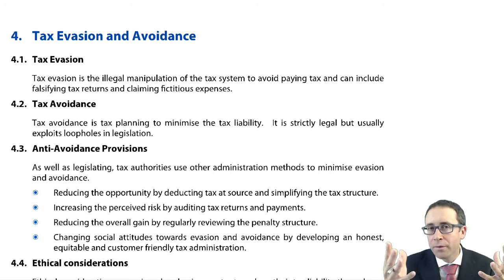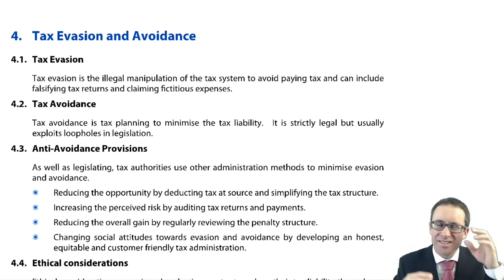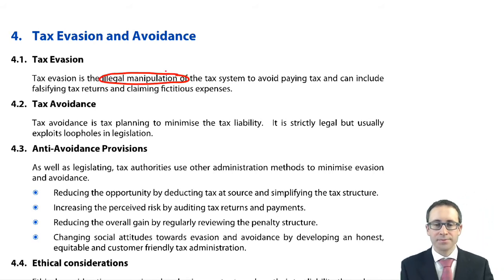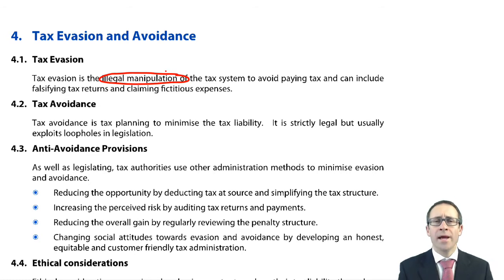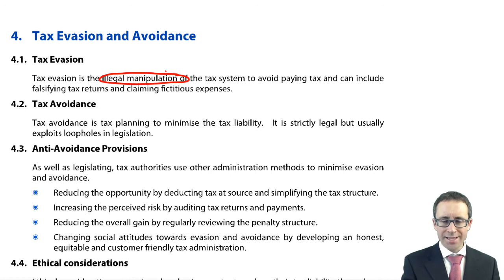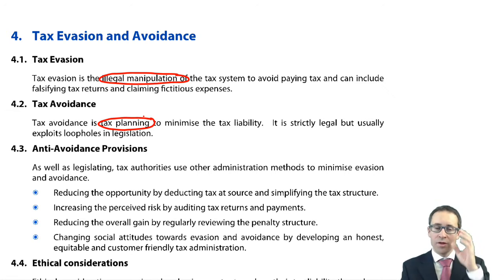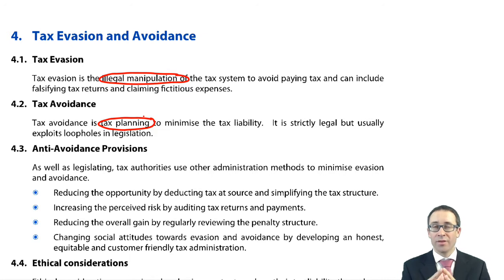Tax evasion versus tax avoidance — tax evasion is the illegal manipulation of your tax bill. You might be making a false claim, saying you've incurred expenditure that is disallowable when maybe you haven't, or claiming an incorrect amount. So you are evading the payment of tax, which is entirely illegal. Avoidance, on the other hand, is legal — it's a way to reduce your tax bill via careful tax planning, maybe with the use of losses or transfer pricing. Although it is legal, it does bring around ethical issues about how much a business is prepared to exploit the loopholes in the tax legislation.